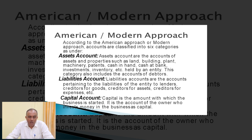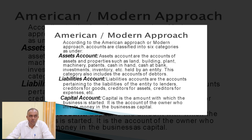Asset accounts are the accounts of assets and properties such as land, building, plant, machinery, goodwill, patent, copyright, trademark, cash in hand and cash at bank, inventory, and investment. This category also includes accounts of debtors — those to whom goods are sold on credit — as debtors are part of assets.